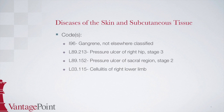From there, find stage 2 and then the site, which is the sacral region. This points to L89.15 with a checkbox indicating more digits are required. In the tabular, subcategory L89.15 is for pressure ulcer of sacral region. Then we need a 6th character of 2 as the ulcer is stage 2, giving us a final code of L89.152.